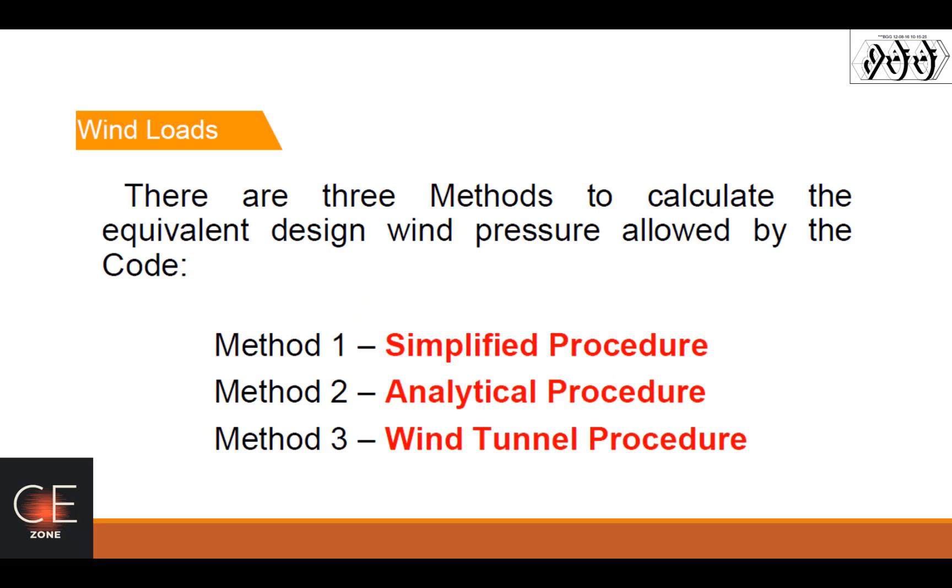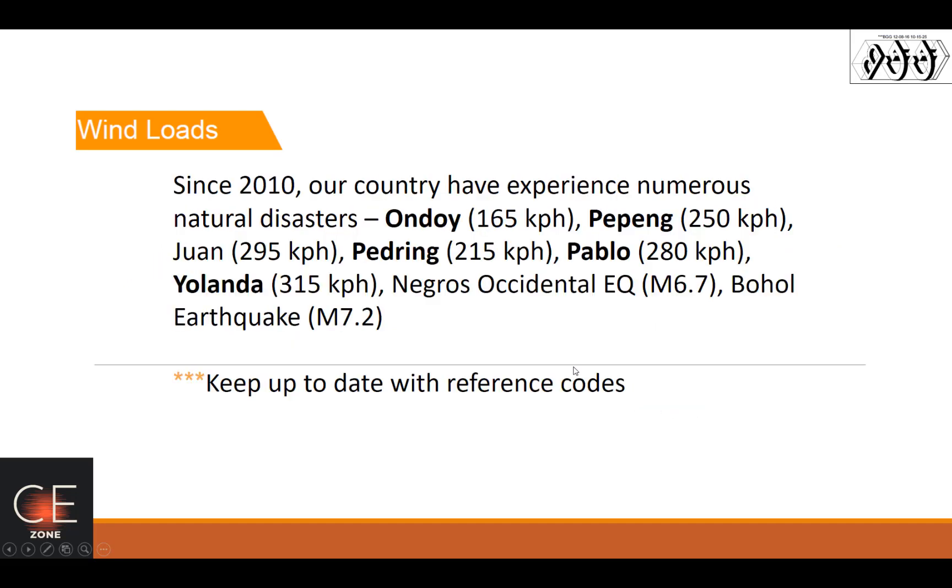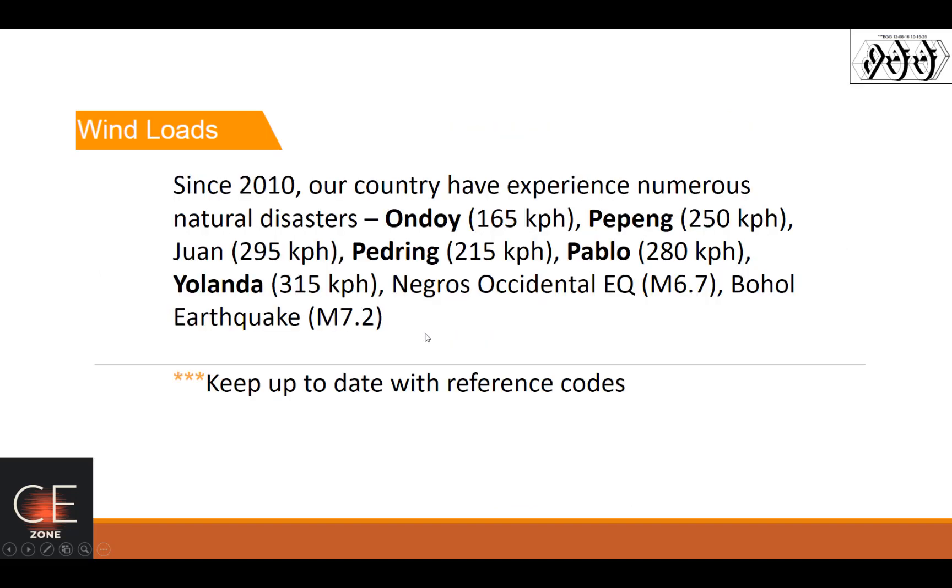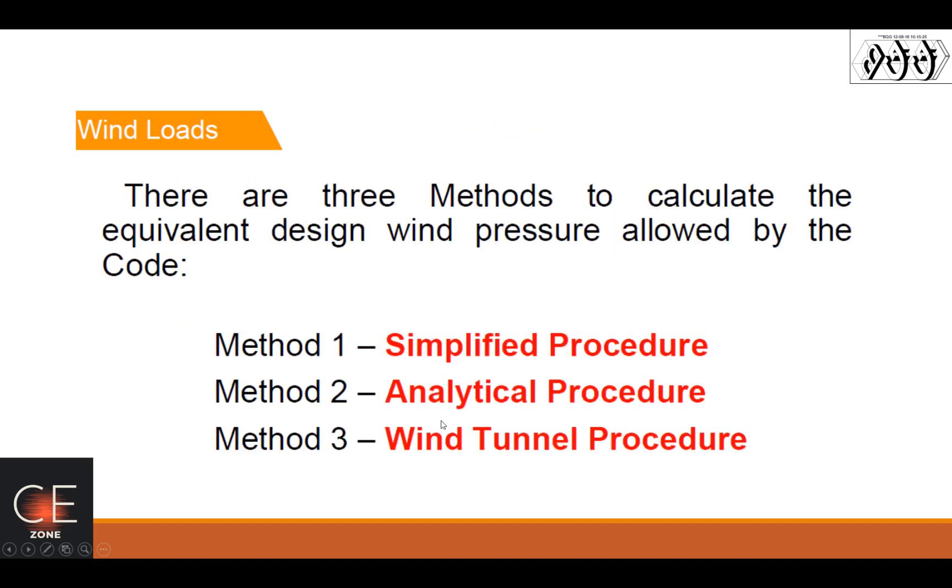There are 3 methods to calculate the Equivalent Design Wind Pressure allowed by the NSCP. Now you have the Simplified Procedure for regular structures, and then the Analytical Procedure, which is this formula that we will be implementing on our workshop.